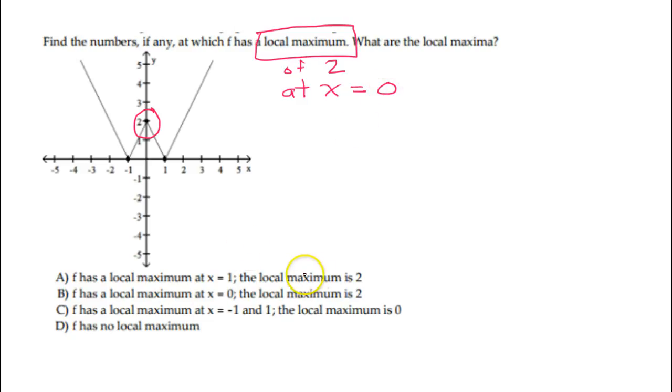So let's find that. f has a local maximum at x equals 1? Nope, it's at 0. Local maximum at 0, local maximum is 2. That's what we just said. The answer is B.